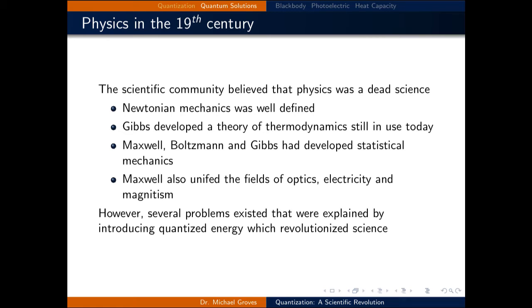Maxwell, Boltzmann, and Gibbs also developed statistical mechanics. And Maxwell also unified the fields of optics, electricity, and magnetism. Now, this is a very large body of accomplishments, and it helped usher in a modern era of science in its own right. But this body of accomplishments will be referred to as classical mechanics. And inside classical mechanics, there were several problems that still existed that were explained only by quantizing energy. And this revolutionized science.